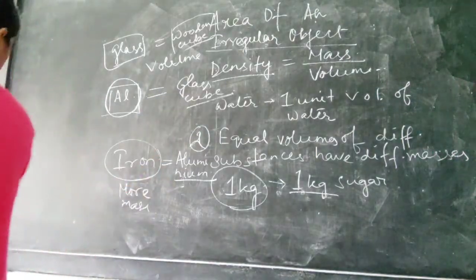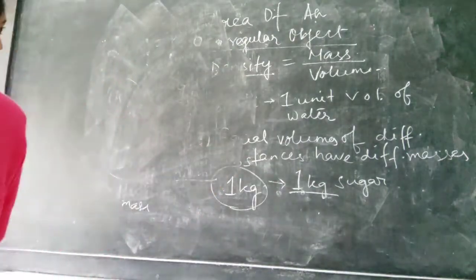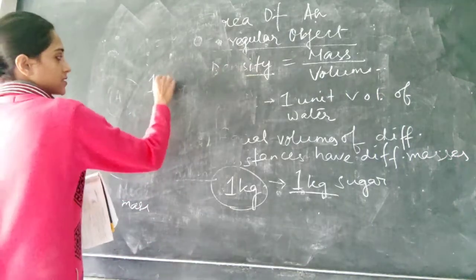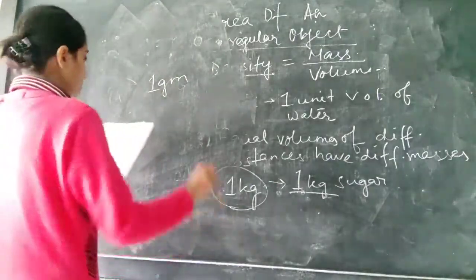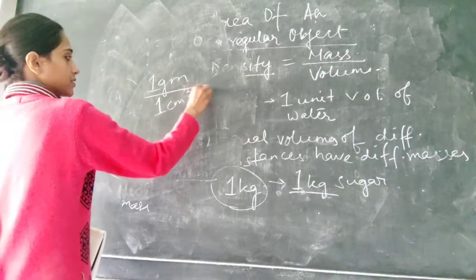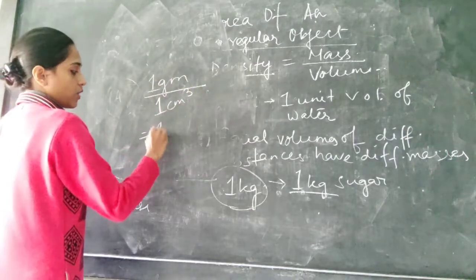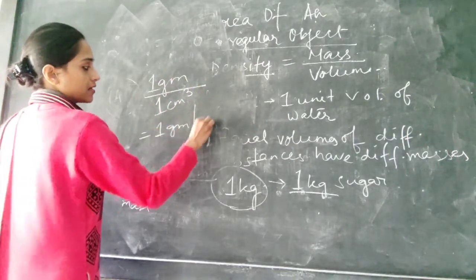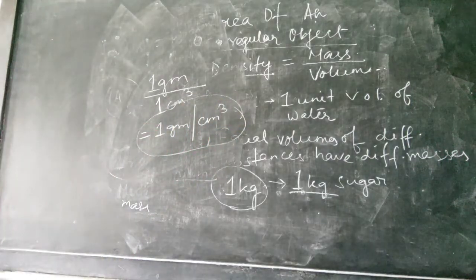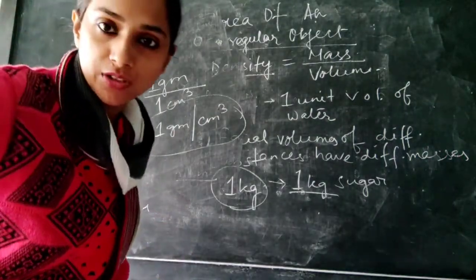So the density of water if I will say. So you just think how can we take out the unit of the density. Mass. Then you will think what? Gram or like that. So mass of water is one gram by volume. That is one centimeter cube. So what will be the unit of that, of this density? So it will be one gram per centimeter cube. So this will be the unit of the density. In this way you will find it out. So I am keeping this video till this much. In the next video I will continue with the chapter. Thank you.